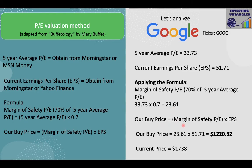The buy price = margin of safety PE × current EPS = 23.61 × $51.71 = $1,220. The current price of Google is $1,738, which is significantly higher than the $1,220 buy price from this method. Both the PE valuation method and the GuruFocus DCF calculator tell us that Google is overvalued — the PE method gives ~$1,220 and the DCF method gives ~$1,170. I generally take an average of both methods to determine a comfortable price range. Google is clearly overvalued.